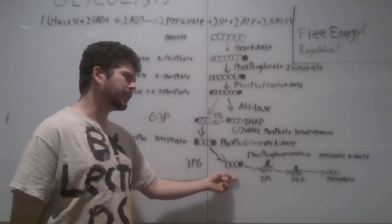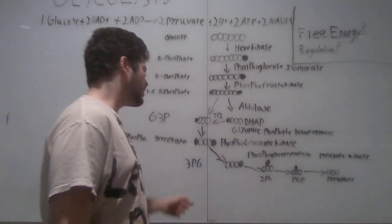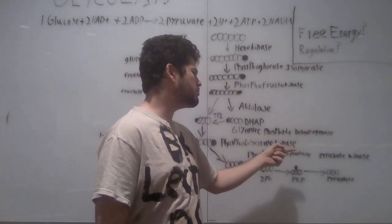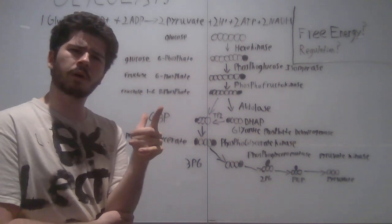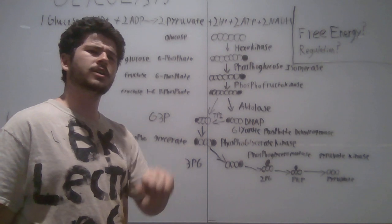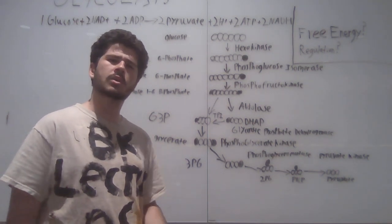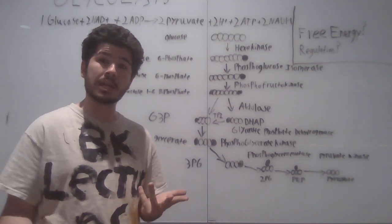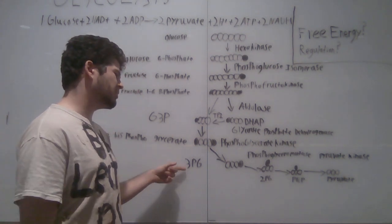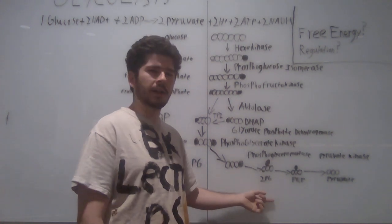This molecule here undergoes a different reaction from the ones that we've seen before. 3-PG undergoes the enzyme phosphoglyceromutase. Phosphoglycero relating to a glycerate molecule with a phosphate group on it. Mutase, suggesting that the molecule is going to be mutated in some way, changed. We can see this as it repositions the phosphate group from the third position of the molecule to the second position of the molecule, forming 2-PG.